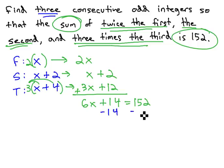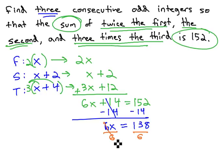Start by subtracting the 14 from both sides, and we get 6x is equal to 138. Finally, divide both sides by 6, and we'll get our final answer for x, or the first odd number, to be 23.